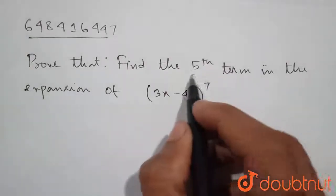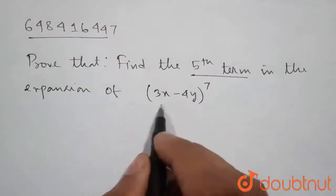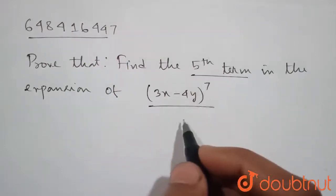Here we need to find the 5th term of the event expression (3x-4y) to the power 7.